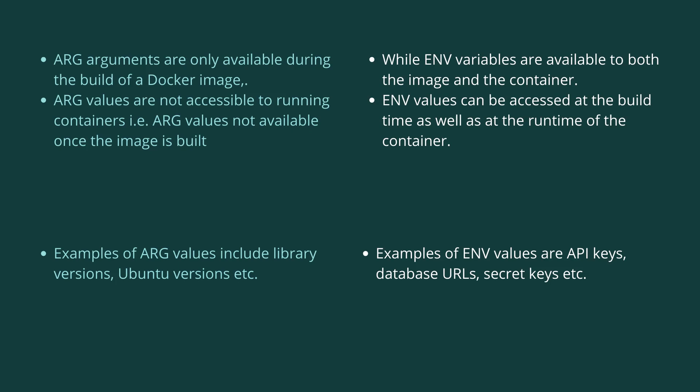Let's try to understand the difference between ARG and ENV variables. ARG variables are only available during the build of a Docker image — they are not accessible while the container is running. Whereas ENV variables are available both to the image as well as the container, so you can access ENV values during build time as well as at runtime.